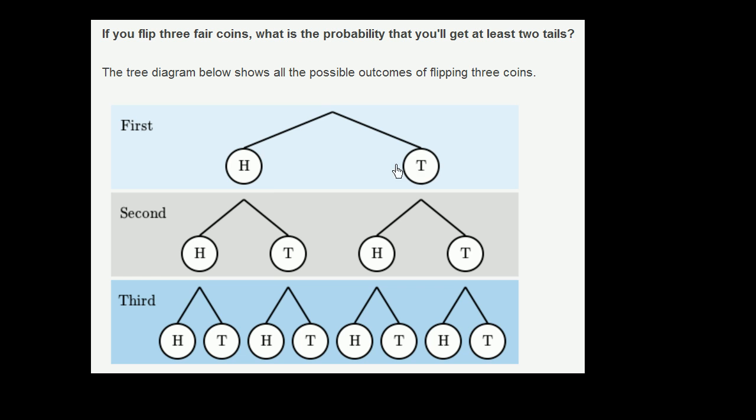At the top of the tree, this shows us the two outcomes for the first coin. Then given each of those outcomes, it shows us what's possible for the second coin. If we've got heads on the first coin, we could get heads or tails on the second coin. If we've got tails on the first coin, we could get heads or tails on the second coin.